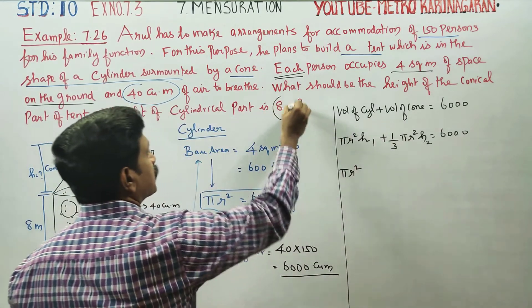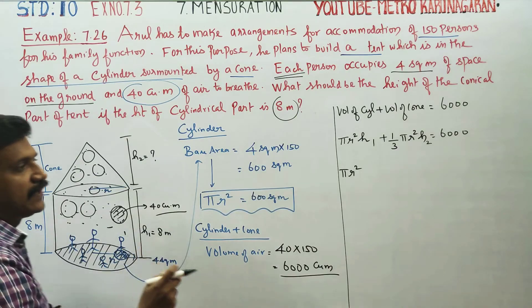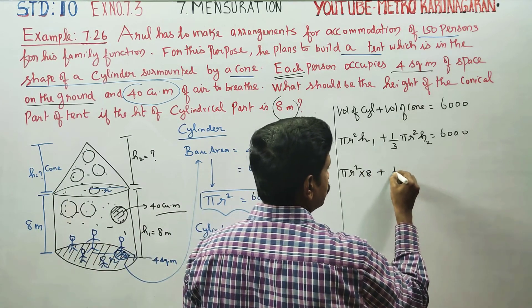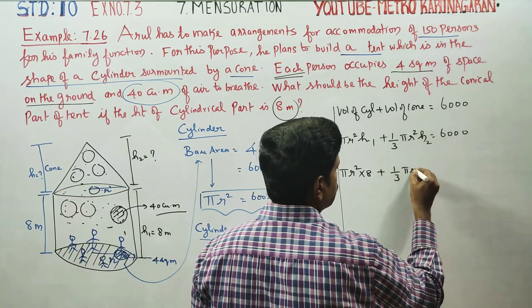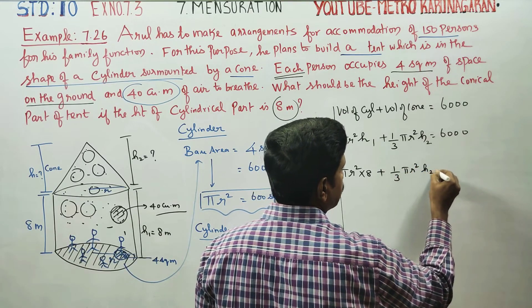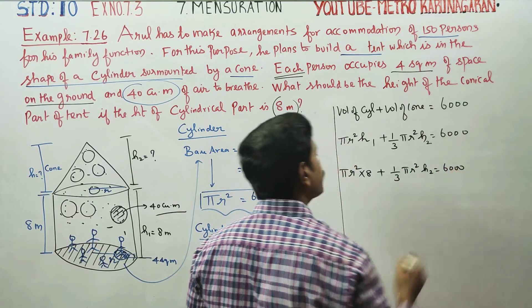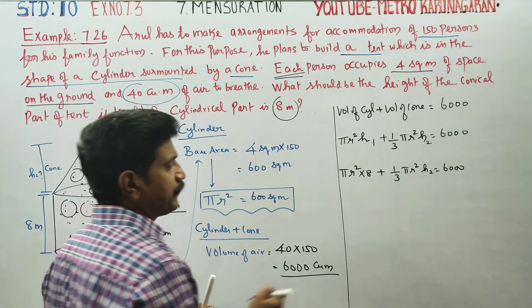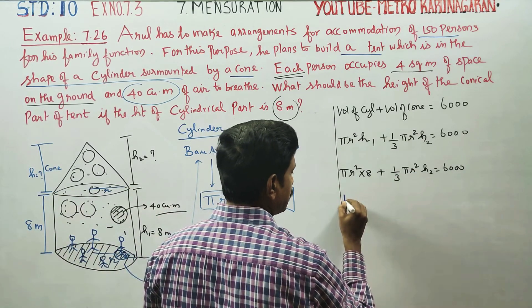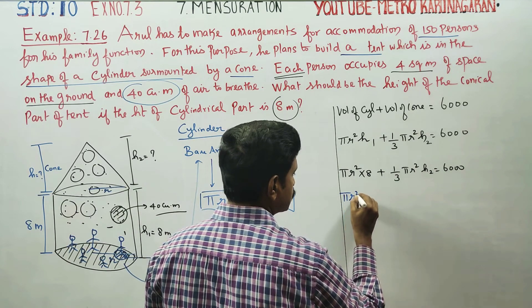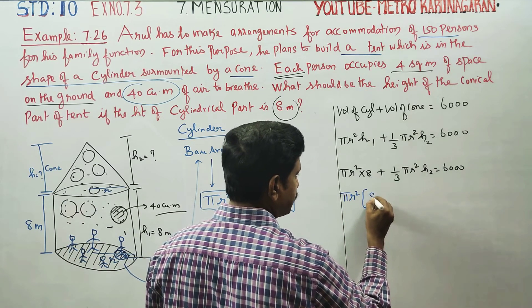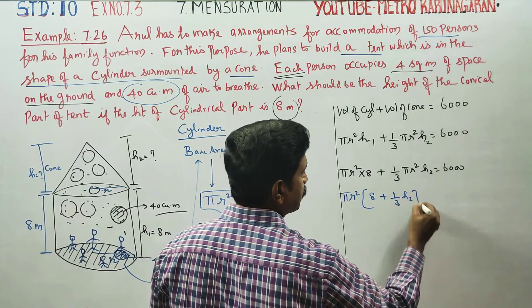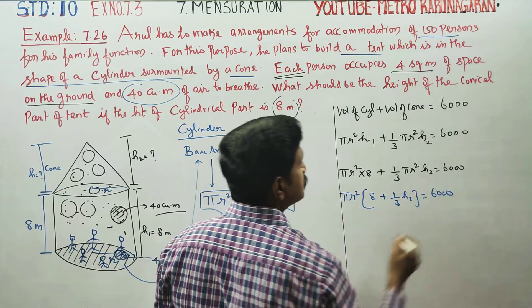Setting h1 equal to 8 meters for the cylinder height: pi r squared times 8, plus one-third pi r squared times h2, is equal to 6,000.